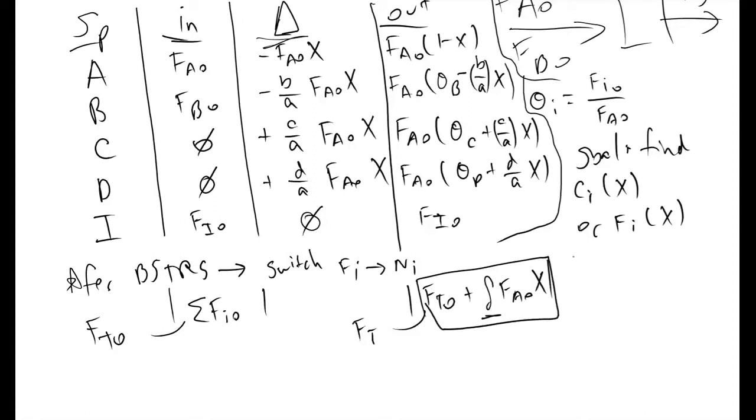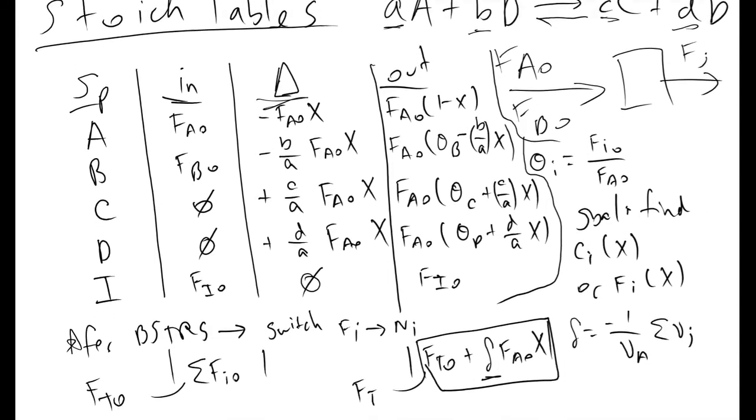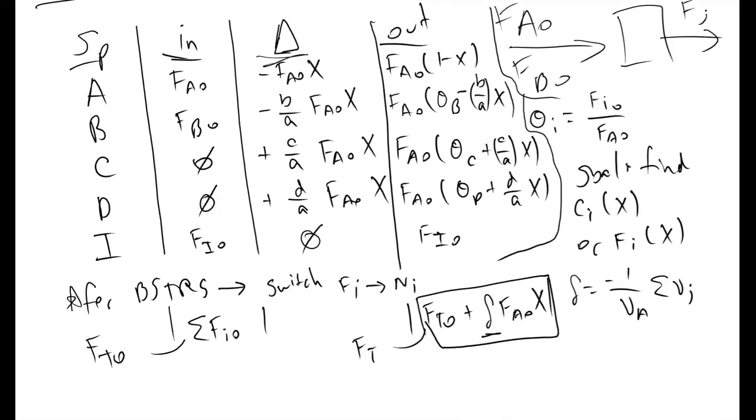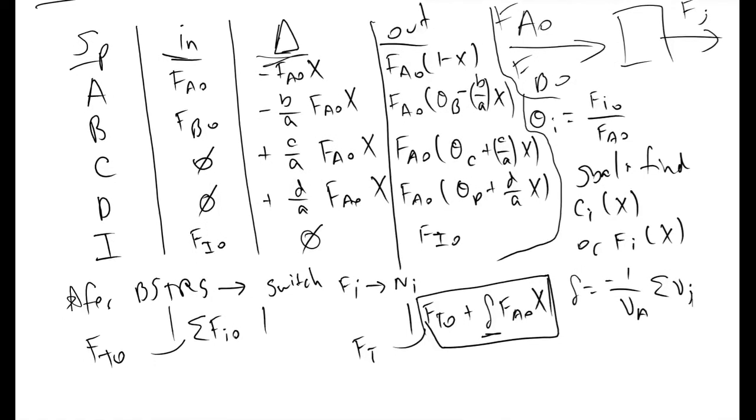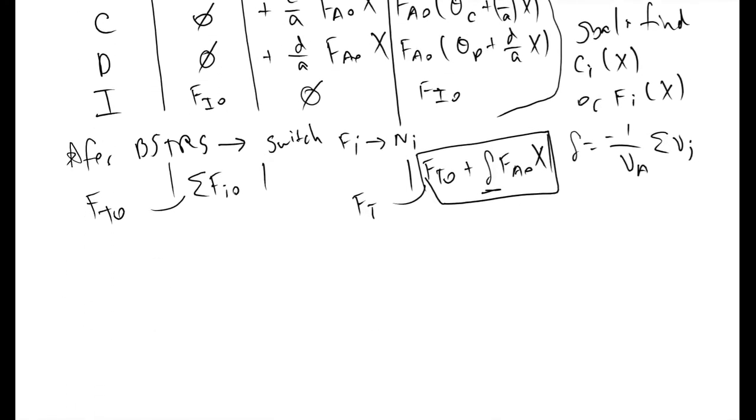Defining what delta is is very important. Delta is equal to minus 1 over nuA, the stoichiometric coefficient of your limiting reactant, times the sum of nuJ, for all J. And what that would be in this reaction, these stoic coefficients, nuA.